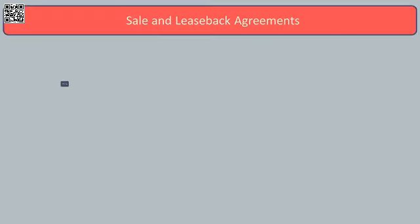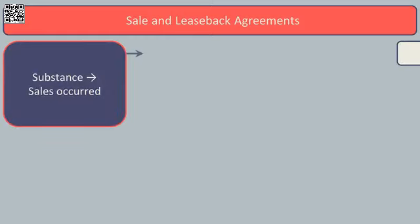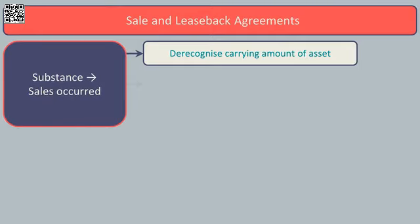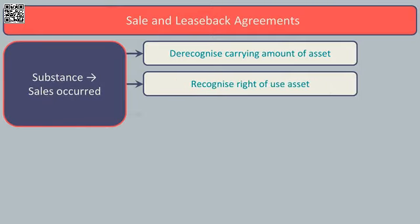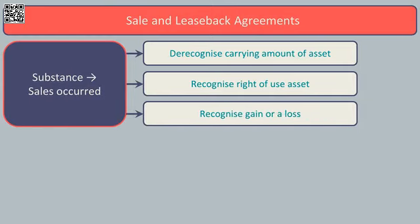Our final area is sale and leaseback arrangements. To account for these properly, we have to decide whether in substance the sale has occurred or has not occurred, using the criteria in IFRS 15 revenue recognition to help make that decision. If the substance is that a sale has occurred, we must de-recognise the carrying amount of the asset, recognise a right of use asset as we're leasing it back, and recognise a gain or a loss.